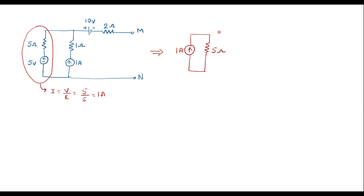The rest of the circuit will be same. Now, if a resistor is connected in series with a current source, that resistor has no effect and we can ignore it. So we can ignore this 1 ohm resistor and connect only the 1 amp current source. If any resistor is connected in series with a current source, we can ignore that resistor.